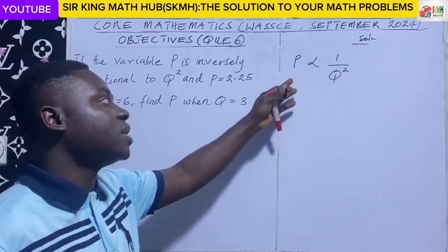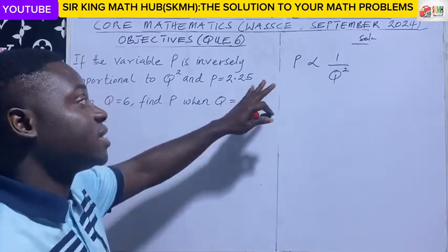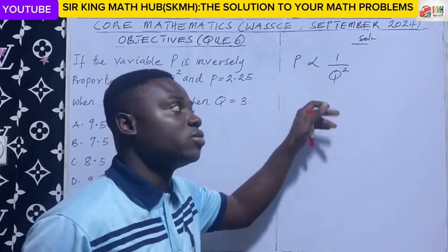So this is how p and k o squared relate inversely. This is how we write it. We can transform this into an equation.